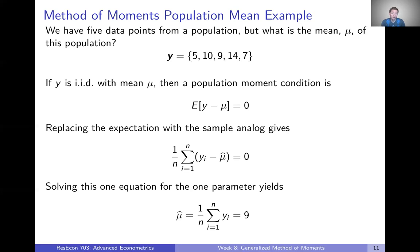In this case, we just have one moment and one parameter, so we just have one equation to solve. We're going to call that method of moments estimator mu hat. We can do some manipulation and reformulate this to say that mu hat equals 1 over n times the sum of our y's — that's just the sample mean. So the GMM estimator for the population mean is simply our sample mean. If we plug in our numbers, it ends up being 9. So if we wanted to know the mean of the population from which our data are drawn, we can just find the mean of our sample, and that is going to be a consistent estimate of the population mean.